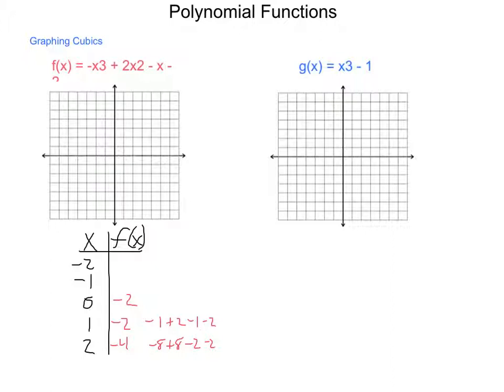Substitute in -1, a -1³ is -1, the opposite of that would be a +1, -1² is 1 times 2 is 2, negative the opposite of -1 would be +1, and then minus 2, so this comes out with a +2.